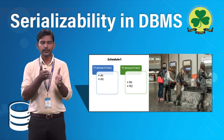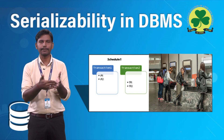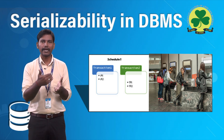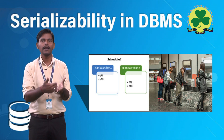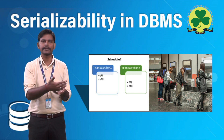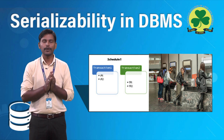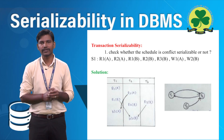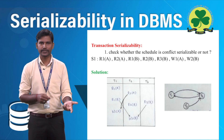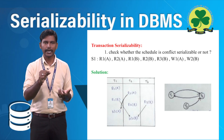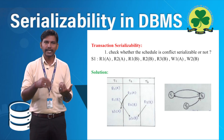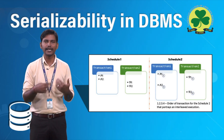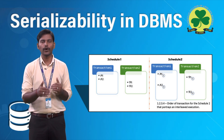When one transaction is reading and another is writing on the same data, there is a dependency — for example, T1 depends on T2. We can also demonstrate this in the form of a dependency diagram. We construct nodes based on the number of transactions, then check for dependencies between their operations. If there is a dependency, we draw an edge between the nodes. If there is a cycle in the dependency diagram, we conclude there is no conflict in serializability; otherwise, if there is no cycle, there is a conflict in the pair of operations. Thank you.